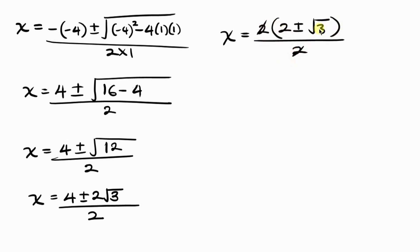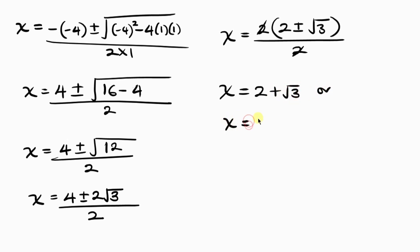The 2s cancel, giving us two values: x equals 2 plus the square root of 3, or x equals 2 minus the square root of 3. This is our final answer.